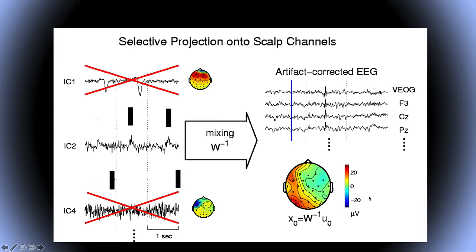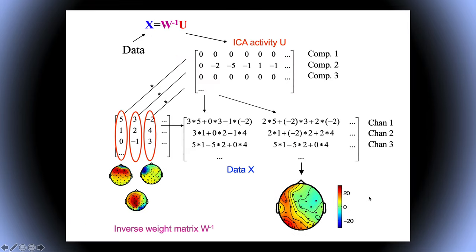If you remember the previous video, I showed the formalism in which you take the ICA activity and multiply by the inverse weight matrix — whose columns represent the scalp topographies — and then you get back the original data. What you can simply do to remove components is zero out the activity of those components, so when you multiply the ICA activity by the scalp topography you get back the data without them. You could also zero out the columns to achieve an equivalent result.